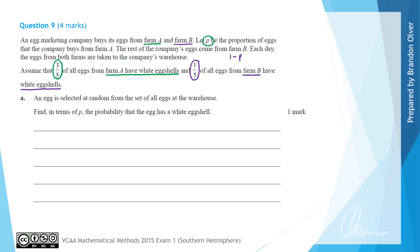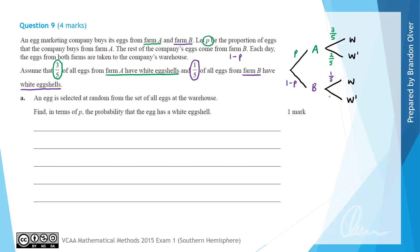To answer this question we start with a tree diagram. The first option is that the egg could have come from farm A or from farm B, and the second branch represents whether it has a white or not-white egg shell. The proportion of eggs from farm A is P, meaning 1 minus P came from farm B. If the egg came from farm A, there is a 3 in 5 chance it has a white egg shell, and a 2 in 5 chance it doesn't. If it came from farm B, there is a 1 in 5 chance of a white egg shell and a 4 in 5 chance it doesn't.